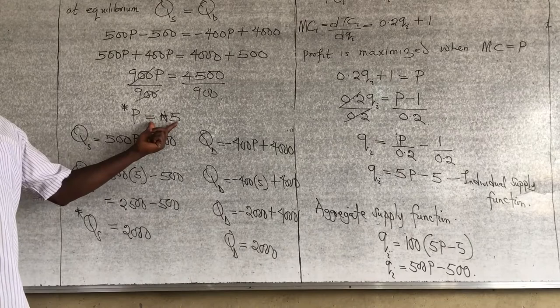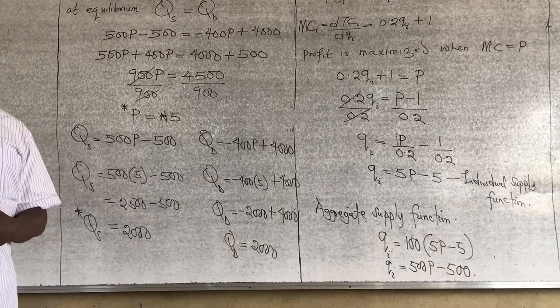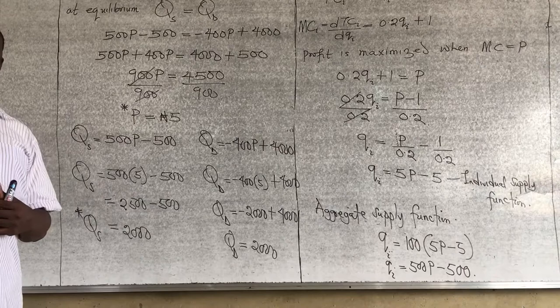So, the equilibrium price is 5 Naira and the equilibrium quantity is 2000. In the next class, I will cover the case involving tax — what if the supplier has to pay tax to the government?